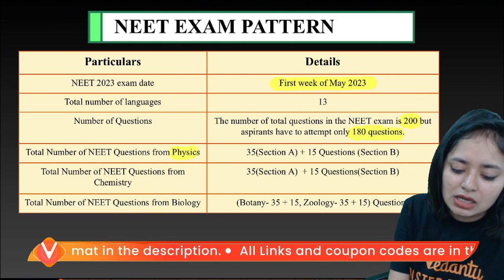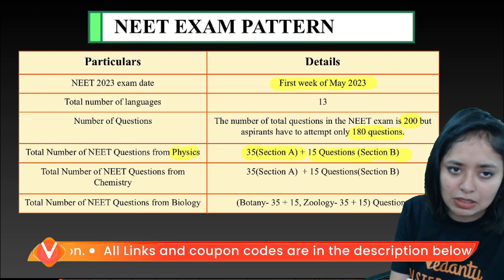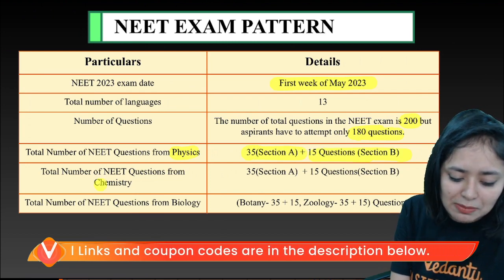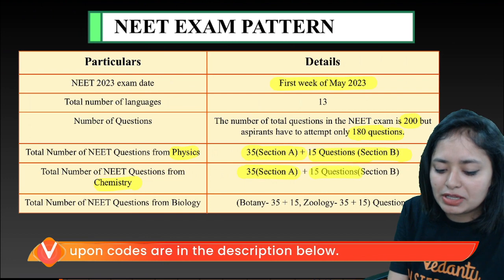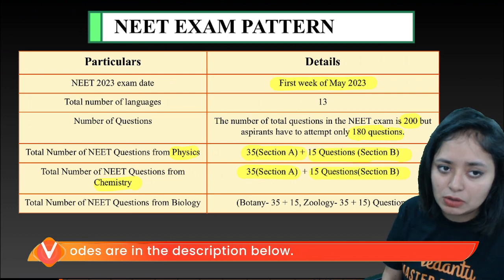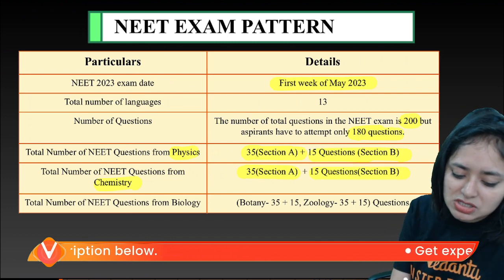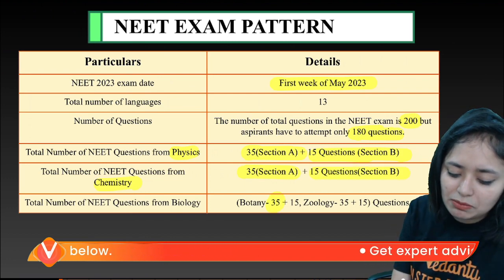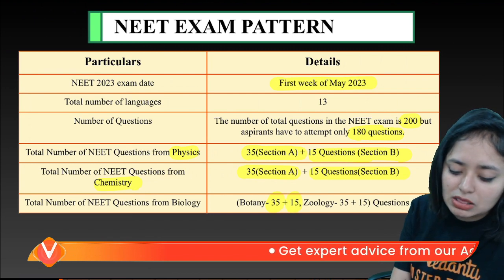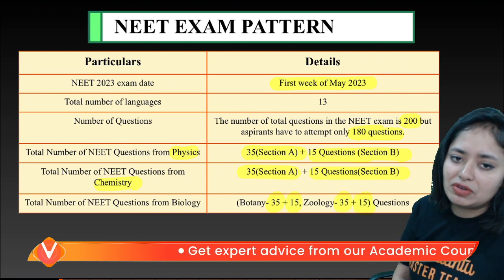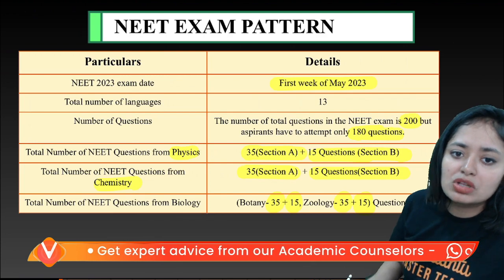Physics is 35 questions in Section A and 15 questions in Section B. Chemistry is 35 questions in Section A and 15 questions in Section B. Biology is 35 questions and 15 questions. Zoology is 35 questions and 15 questions. Obviously Biology is going to wait.